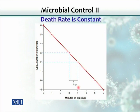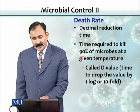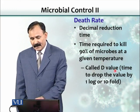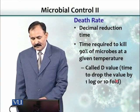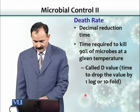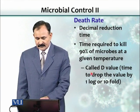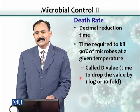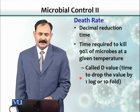We can calculate D, what we call decimal reduction time, also called a D value. The D value is the amount of time in which there is one log reduction in the number of organisms — the time required to kill 90% of the microbes at a given temperature, or the time to drop the value by one log or tenfold. If we know the D value, we know how much time is needed to kill the organisms completely in a sample.